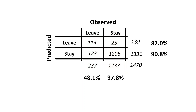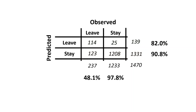The rows show what our model predicted. Reading across left to right, our model predicted that 139 employees left the firm and 1,331 stayed — again a grand total of 1,470. We can see that 90.8% of employees our model predicted would stay actually did remain, while 82% of our attrition predictions were correct. Looking column-wise, of the 237 who left, our model only correctly classified 114, or 48.1%. Of the 1,233 who stayed, it accurately predicted 1,208, or 97.8%. We're doing a much better job predicting who will stay rather than who will leave.